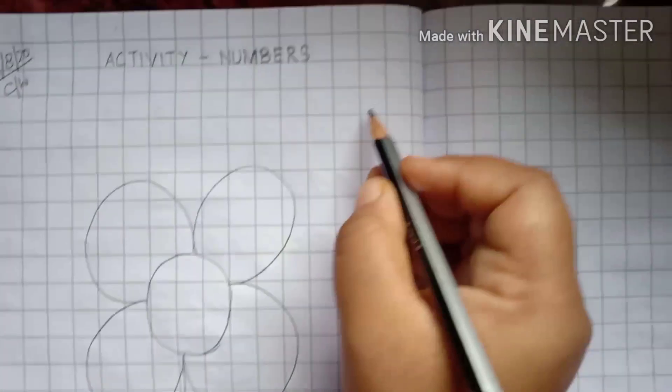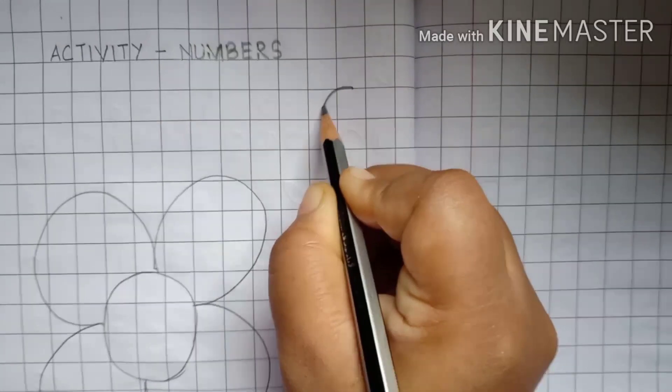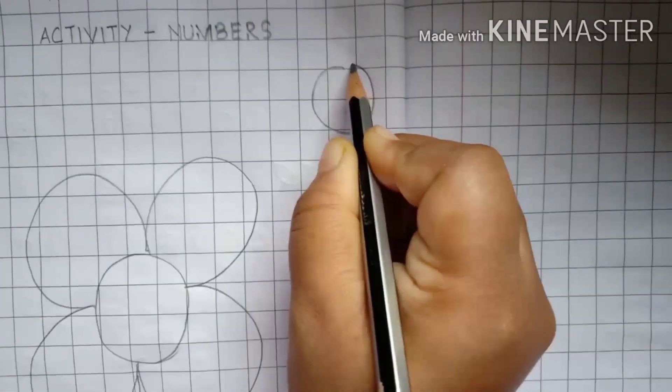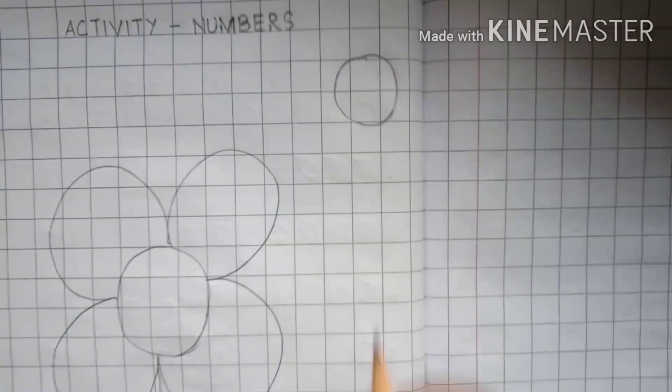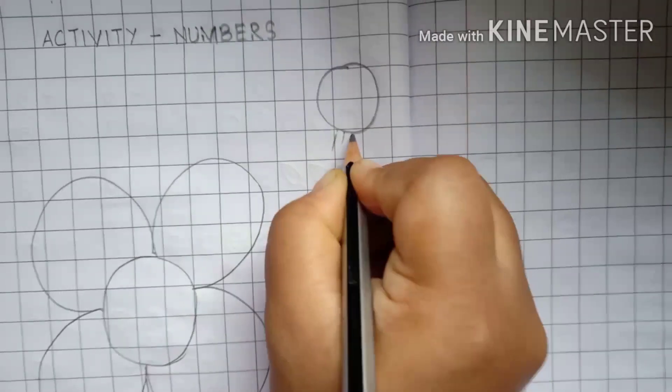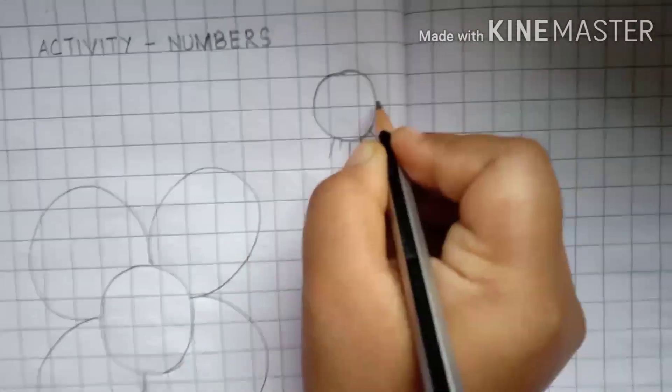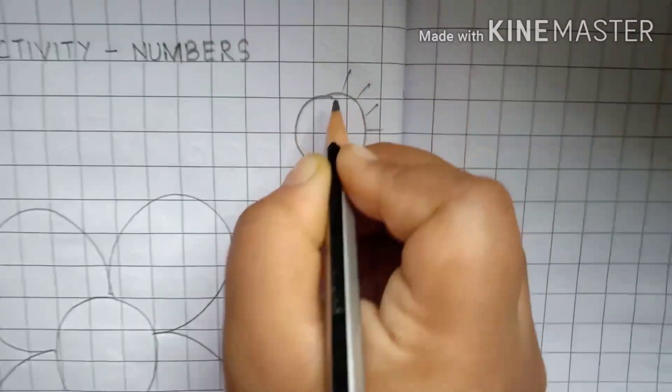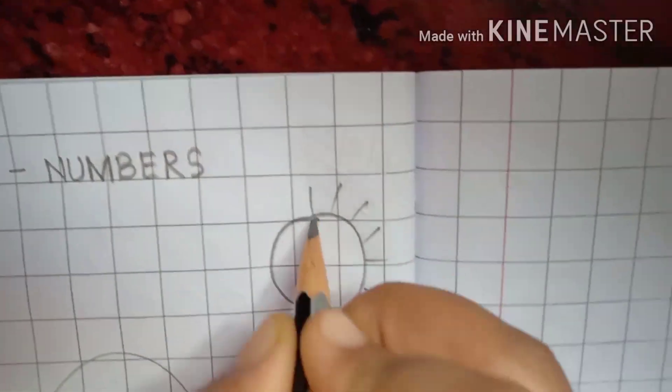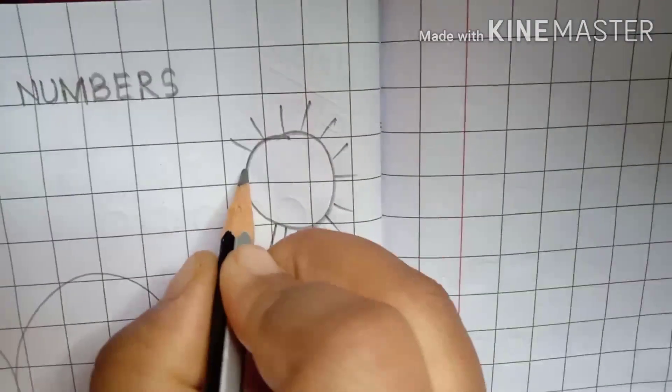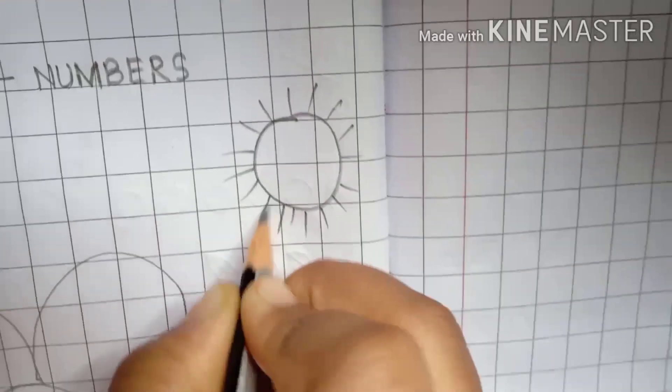What else can we draw? We can draw a circle and make it as a sun. You have already drawn sun before also. Like this. Draw lines.